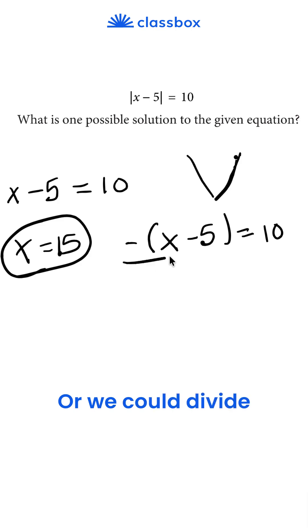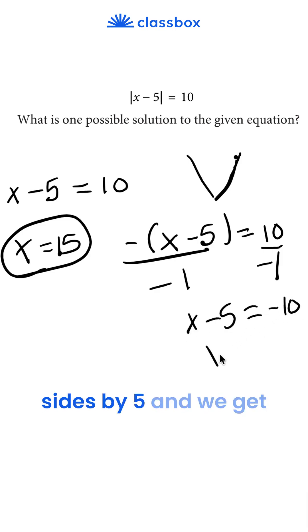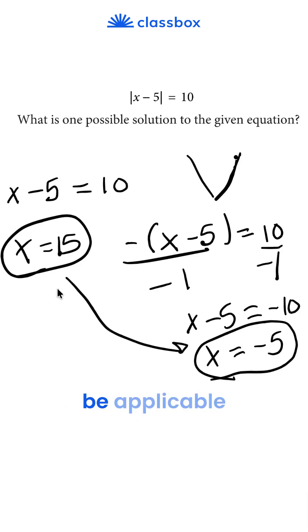Or, we could divide both sides by negative 1 to get x minus 5 equals negative 10. Add both sides by 5 and we get x equals negative 5, which is the second possible solution. So, either of these answers will be applicable for this problem.